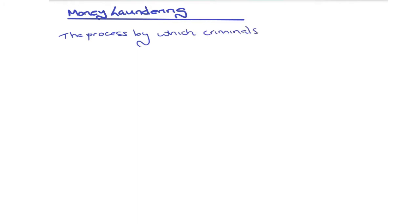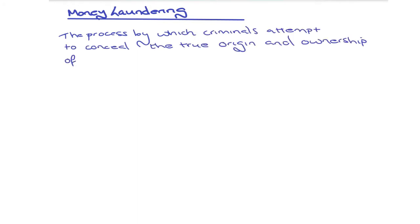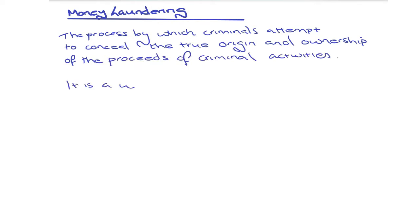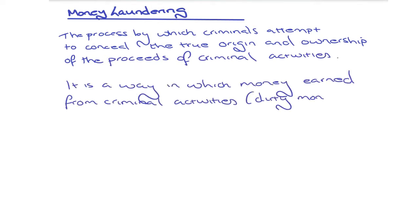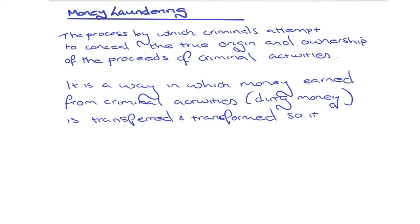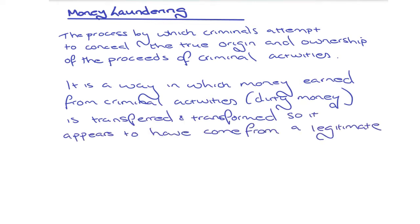Money laundering is the process by which criminals attempt to conceal the true origin and ownership of the proceeds of criminal activities. It's a way in which money earned, classed as dirty money, is transferred and transformed so it appears to have come from a legitimate source, known as clean money.